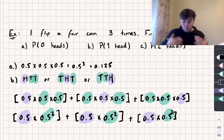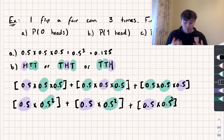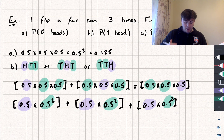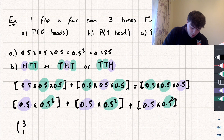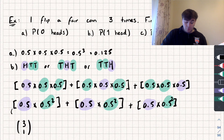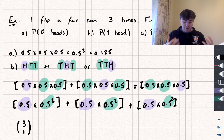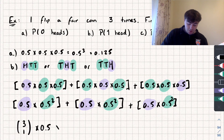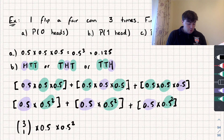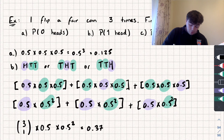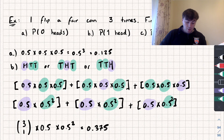We can simplify using the binomial coefficient: how many ways can we arrange one head among three flips? That's three choose one, which equals three — matching the three arrangements we found. So the probability is three choose one × 0.5 × 0.5², which gives 3 × 0.5 × 0.25 = 0.375. This is the binomial distribution formula starting to take shape.